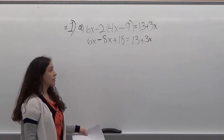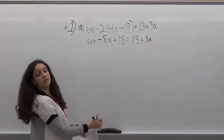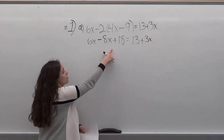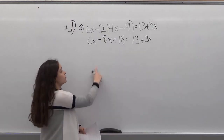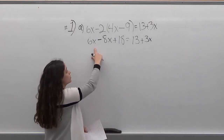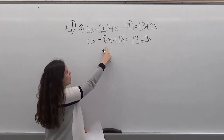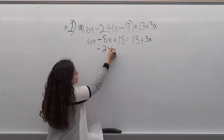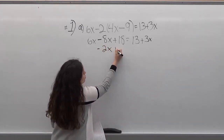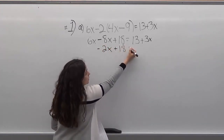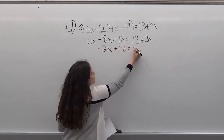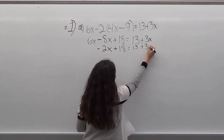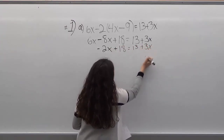So now the next step — since you can combine like terms over here, you're going to do that first. So 6x minus 8x is minus 2x, and then plus 18 equals 13 plus 3x.